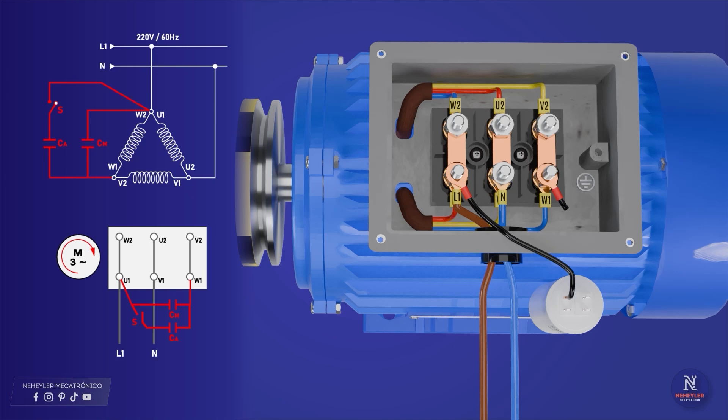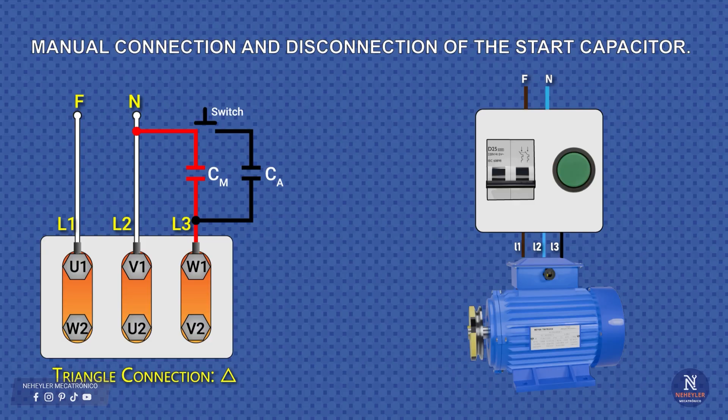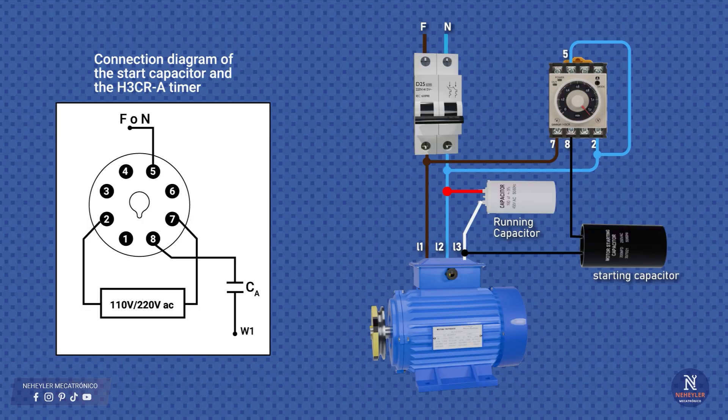In a previous video we saw how to calculate the run capacitor and the start capacitor to connect a three-phase motor to a single-phase line. Today we are going to take the next step, learning how to correctly disconnect the start capacitor, both manually and automatically.